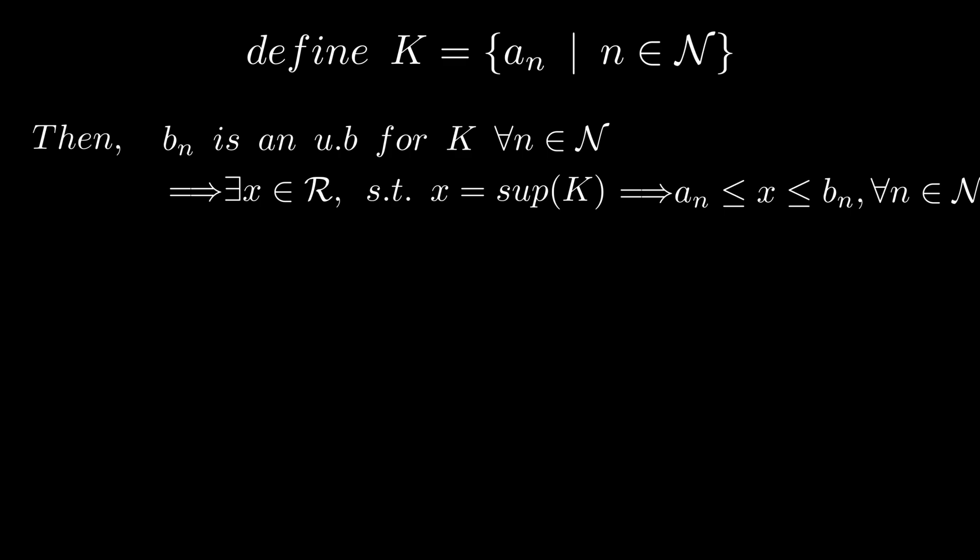x is greater than or equal to an and is less than or equal to upper bounds bns for every natural number n, which means that x is in the interval an, bn for every natural number n, which means that x is in the infinite intersection of the intervals an, bn.